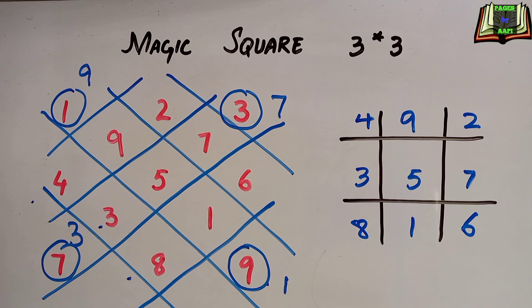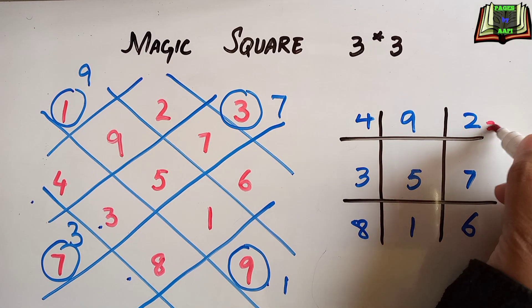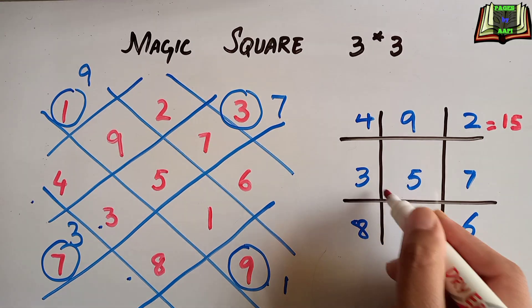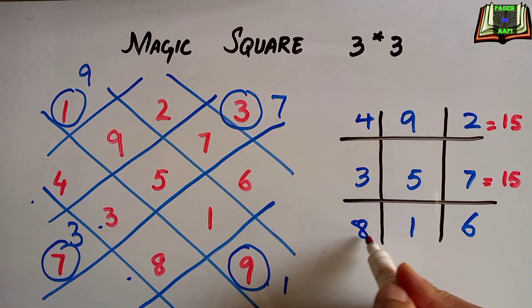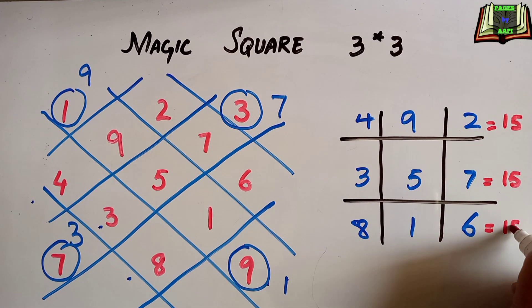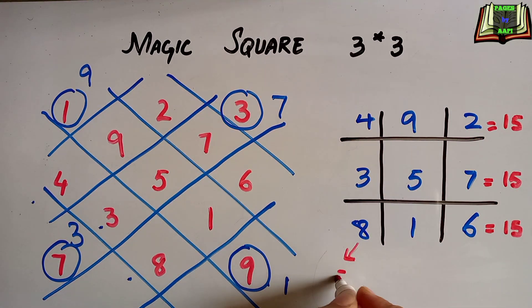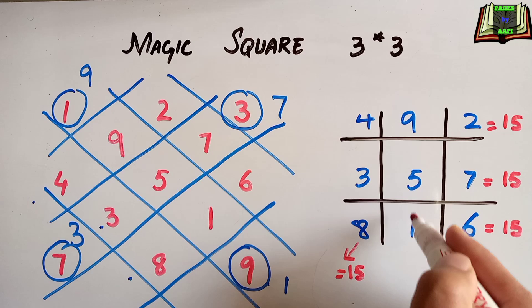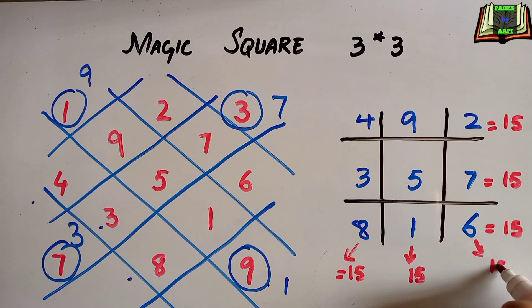But we have to check if this is a magic square or not. For this we are going to add up all rows, columns, and diagonals. 8, 1, 6 is 15. 8, 5, 2 is 15. This diagonal is also equal to 15, and this column is equal to 15. This diagonal is also equal to 15.